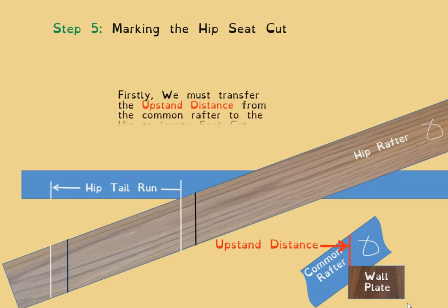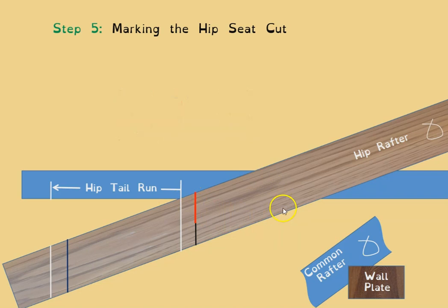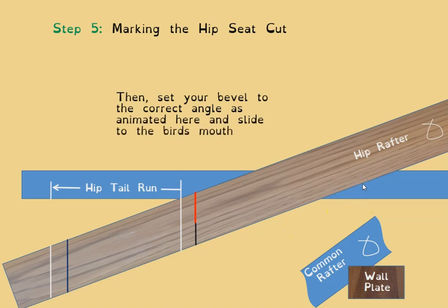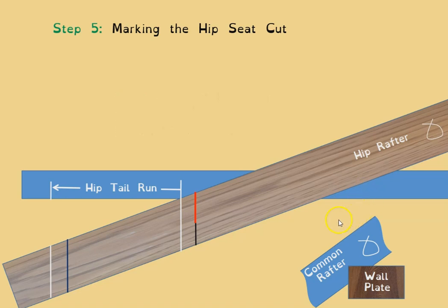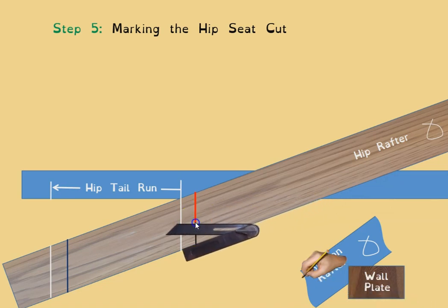Next is marking the hip seat cut. First, transfer the upstand distance to where the bird's mouth will occur. Then set your bevel to the angle between the rise leg and the run leg — that is the seat cut angle. Flip the bevel onto the underside of the hip and draw the line from there to there. That's your bird's mouth drawn and the waste mapped in.